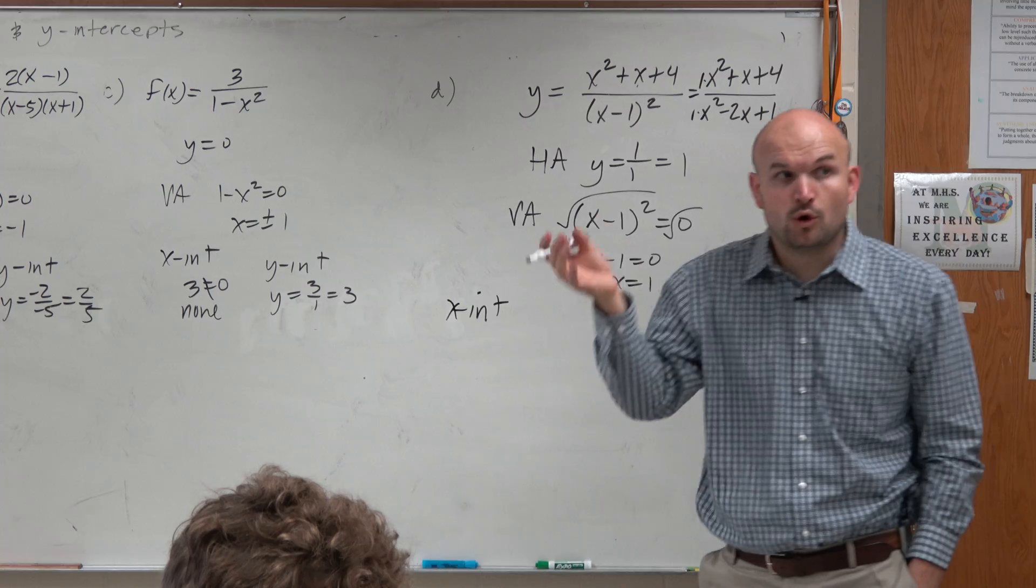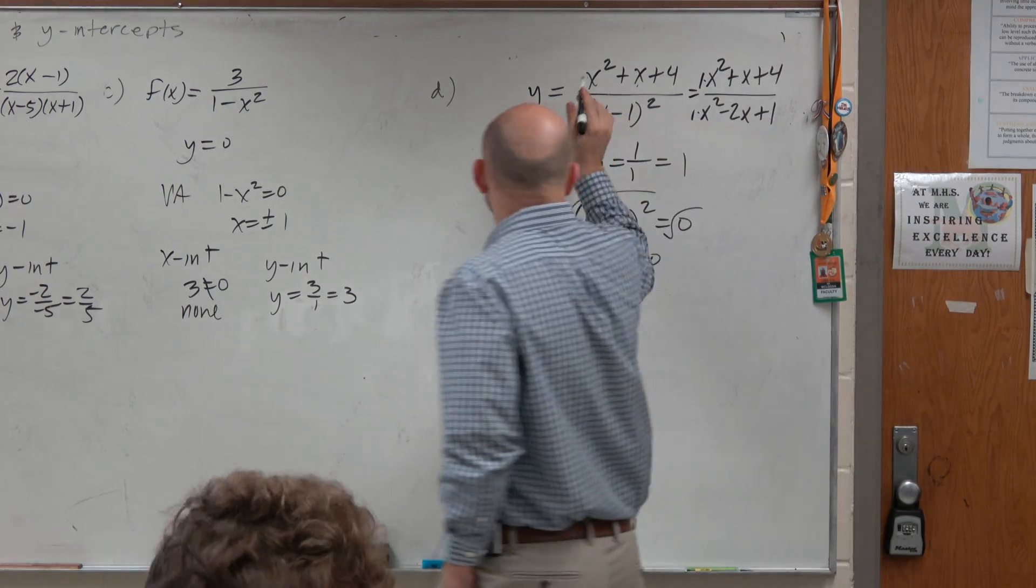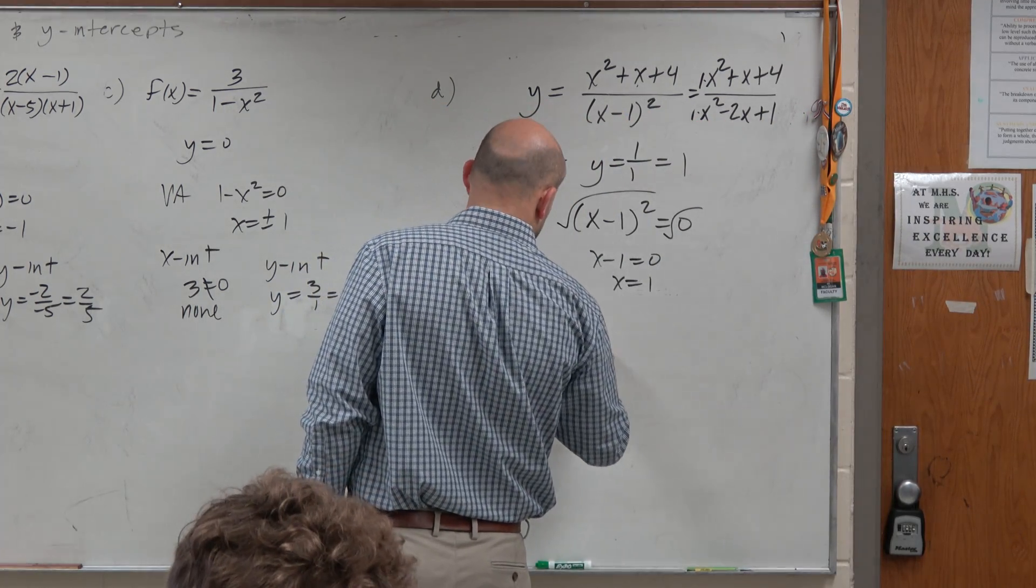X-intercept is when y is equal to 0. Or the shortcut is just taking the numerator, setting it equal to 0.